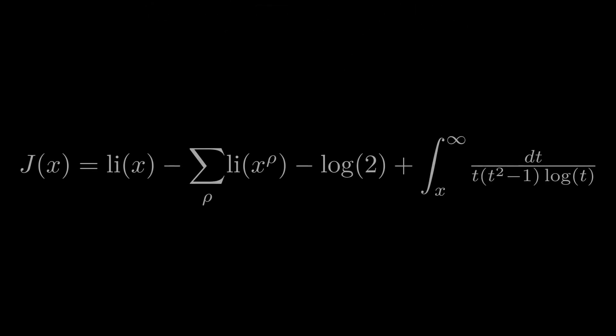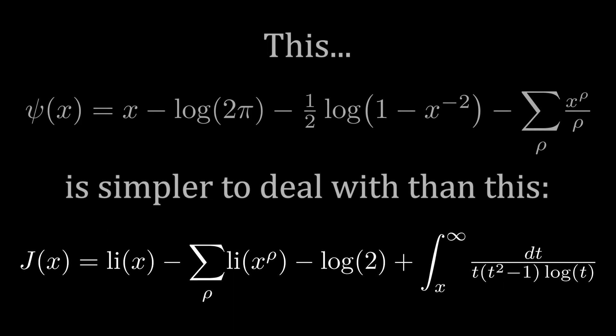Even though J of x has a formula which doesn't require us to know anything about prime numbers, the Chebyshev function ψ of x has a formula which is even simpler.